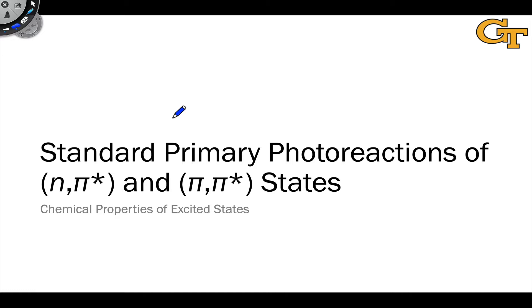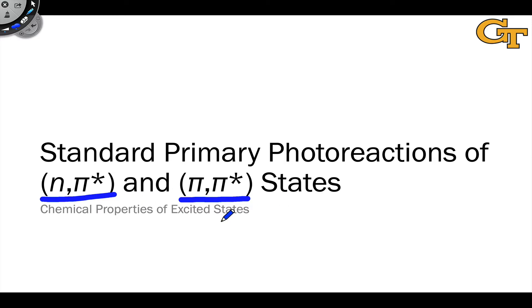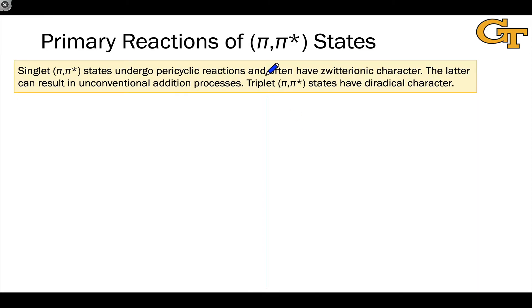We're going to look at the situation from a bird's eye view, talk about very general types of photoreactivity, and try to connect structure to reactivity in a very generalizable way, starting from the NBO electron configurations of the excited state — nπ* and ππ* — and understanding how these give us insight into the possible reactivity patterns of these excited states. Let's begin with the ππ* state.